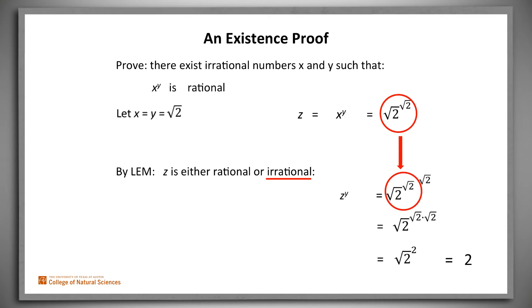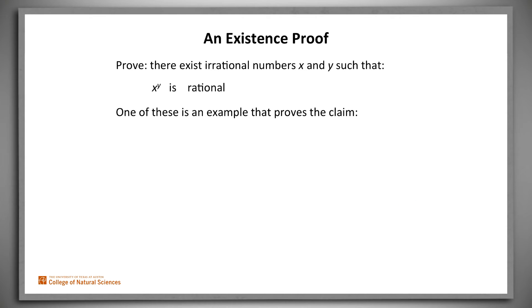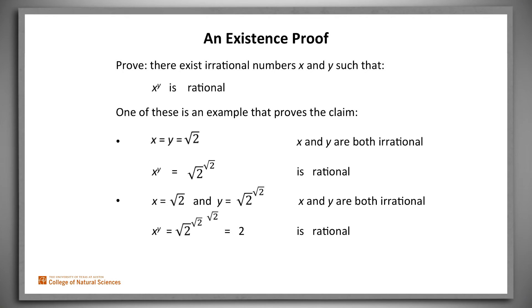So we again have two irrational numbers that prove the claim that two such numbers exist. Either the square root of 2 and the square root of 2 do, or the square root of 2 and the square root of 2 to the square root of 2 power do.